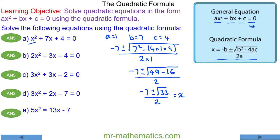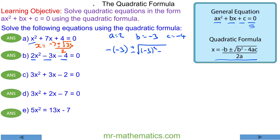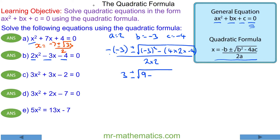For question b, a is equal to 2, b is equal to negative 3, and c is equal to negative 4. So we have: negative negative 3 plus or minus the square root of negative 3 squared minus 4 times a times c, all over 2 times a. Working this out: a negative and a negative 3 become a positive 3, plus or minus the square root of 9 minus negative 32, all over 4. This becomes 3 plus or minus the square root of 41 over 4.